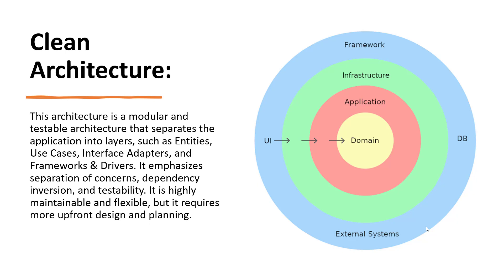The last one is clean architecture, which is the best architecture for small-type applications. This is a modular and testable architecture that separates the application into layers such as entities, use cases, interface adapters, and frameworks and drivers. It emphasizes separation of concerns, dependency inversion, and testability. It is highly maintainable and flexible but requires more upfront design and planning.